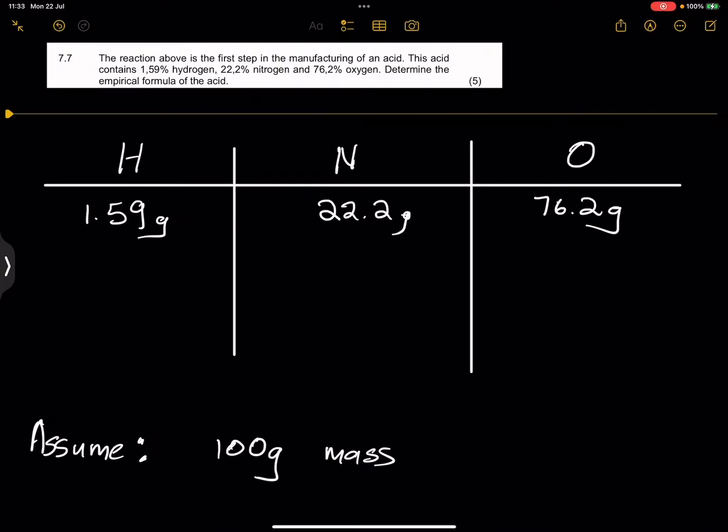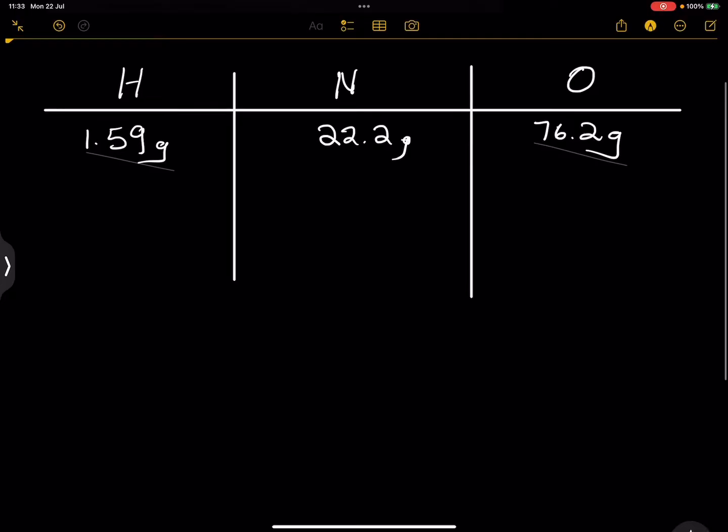Remember, in chemistry we always work with number of moles. Meaning that whenever we want to find something out, we have to use the number of moles. So what we're going to do is use our number of moles: n equals mass divided by molar mass. We're going to divide each one of them by its respective molar mass. The molar mass of hydrogen, if you check in your periodic table, that will be 1. The molar mass of nitrogen, that will be 14, and the molar mass of oxygen will be 16.